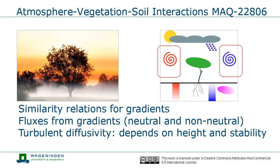In this clip we will discuss how we can determine turbulent fluxes from gradients. In the context of the surface energy balance, those fluxes could be for example the sensible and latent heat flux. Before we can do so, we first need to briefly discuss how we can obtain so-called similarity relationships for those vertical gradients. Those similarity relationships will provide us with information about the shape of the vertical profiles in relation to the stability of the surface layer. The next step is to use those similarity relationships to obtain expressions for the vertical fluxes in terms of vertical gradients.